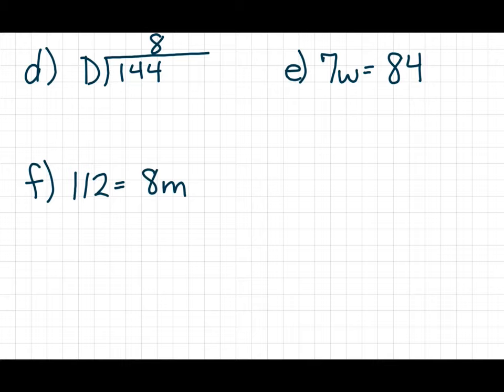144 divided by D equals 8. 144 is my product, or my dividend. So all I have to do is swap these factors, and I will get D, which is 18.